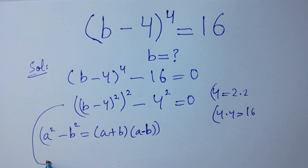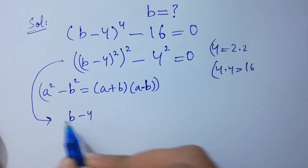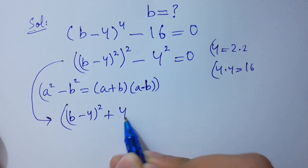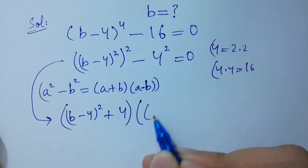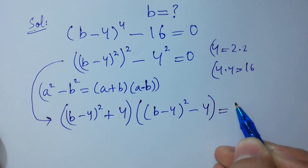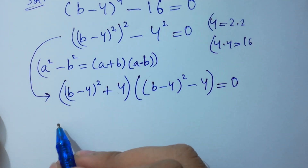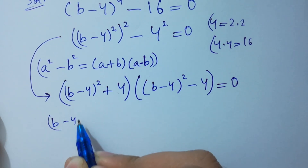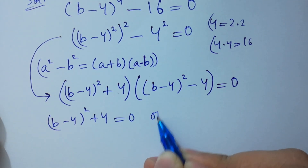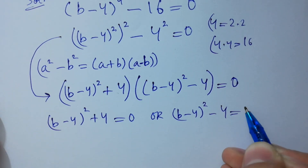So we can apply it here: [(b-4)² + 4][(b-4)² - 4] = 0. This means either (b-4)² + 4 = 0 or (b-4)² - 4 = 0.